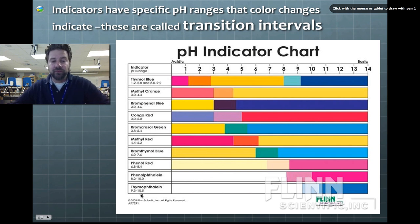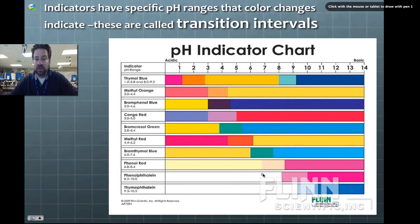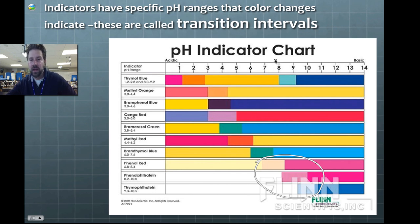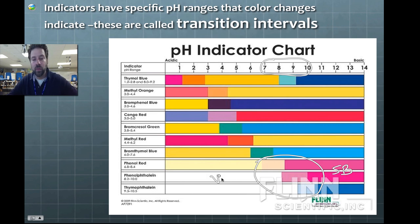For example, thymol phthalein, phenol phthalein, and phenol red all have their color changes in the higher pH range — roughly between seven and ten. Thymol phthalein goes from yellow to peach to pink; phenol phthalein goes from clear to pink to a deeper red; phenol red goes from clear to baby blue to a deeper blue. These work well when dealing with strong bases reacting with weak acids.